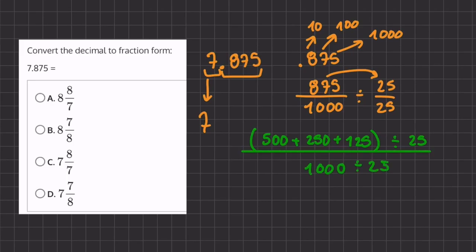Now, this method is called the distributive property because we're able to take this 25 and divide each number in the parentheses. So let's begin. 500 divided by 25 will give us 20, 250 divided by 25 will give us 10, and 125 divided by 25 will give us 5.